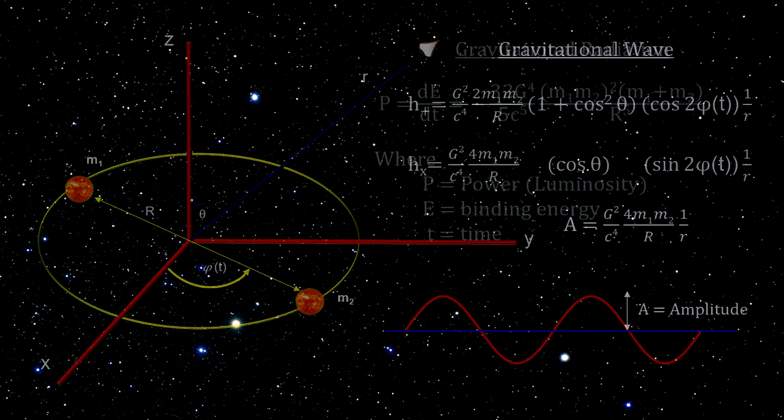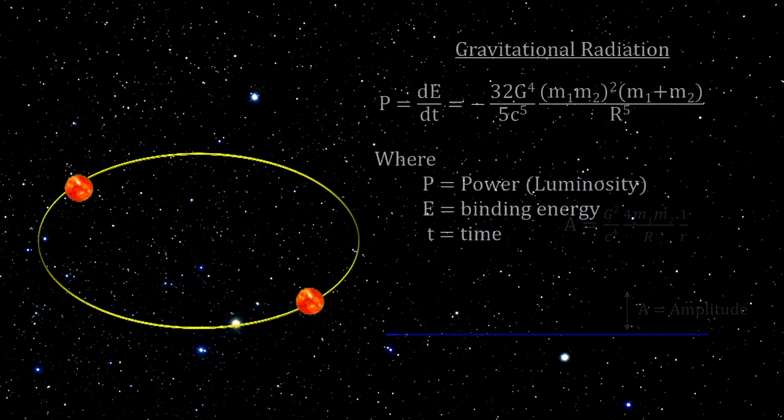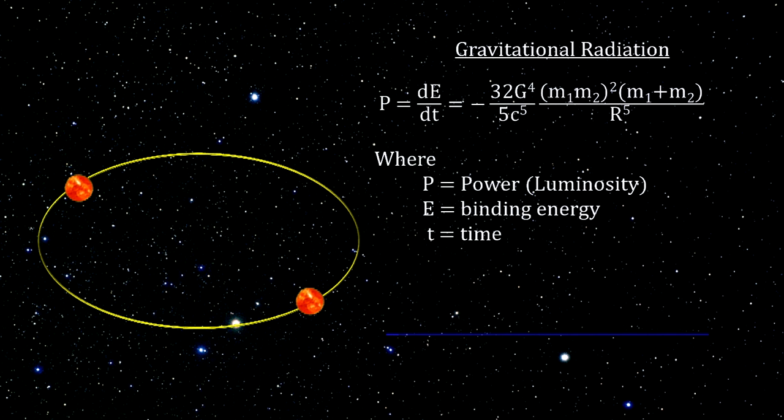There is one more key factor to consider when it comes to binary systems, namely that the gravitational waves carry energy and momentum away from the system. We call this gravitational luminosity.